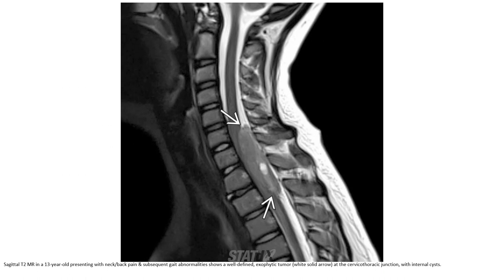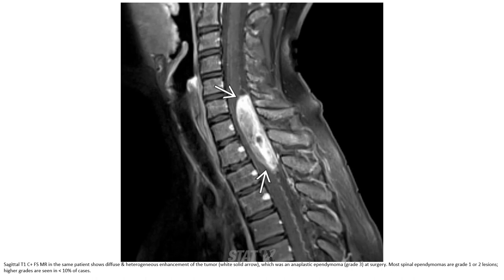T2 MRI in a 13-year-old presenting with back pain and subsequent gait abnormalities shows a large cervicothoracic junction tumor with intrinsic signal change. T1C+ MRI in the same patient shows avid and heterogeneous enhancement of the mass, which was confirmed as a high-grade ependymoma at surgery.